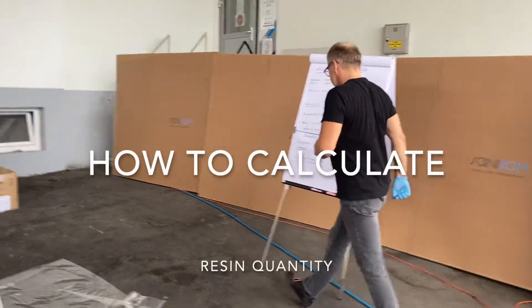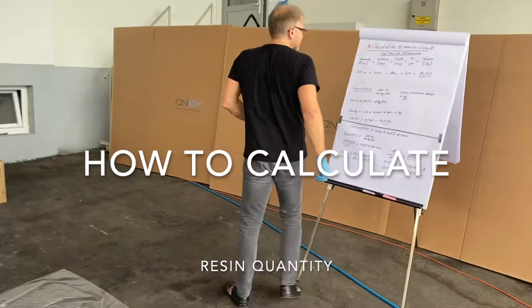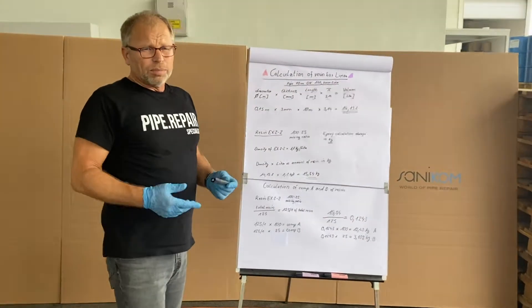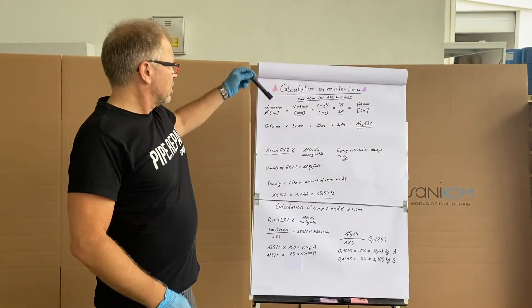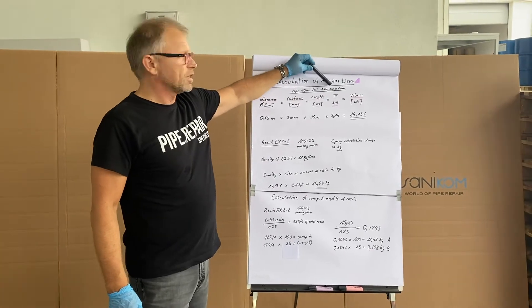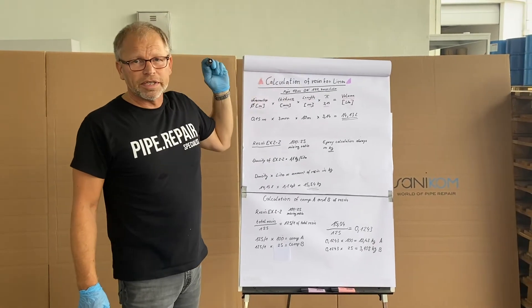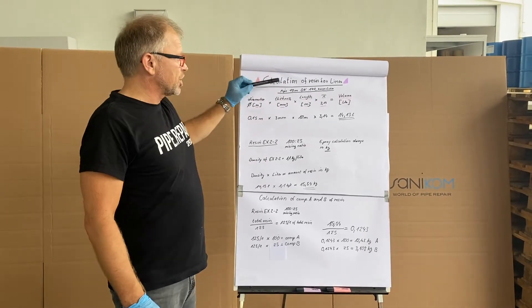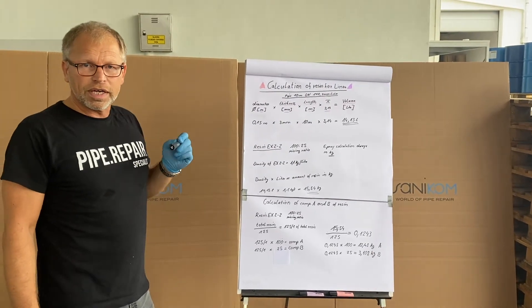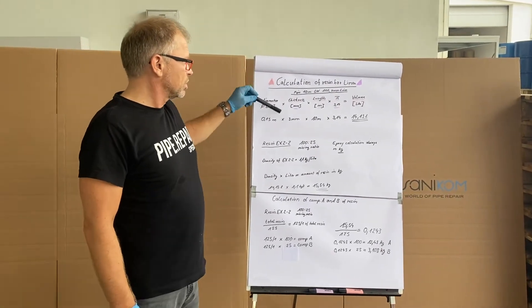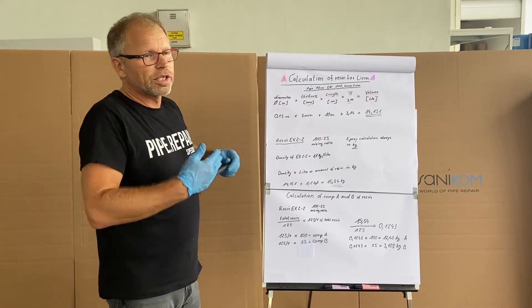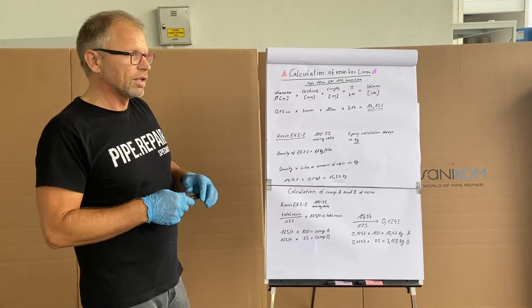This is a general calculation for the resin. For example, I do pipe 10 meter length, diameter 150, with a 3 millimeter liner. This is a general calculation for all of our liners. We just need to change the thickness for the diameter and then you can do the calculation for all of our liners.